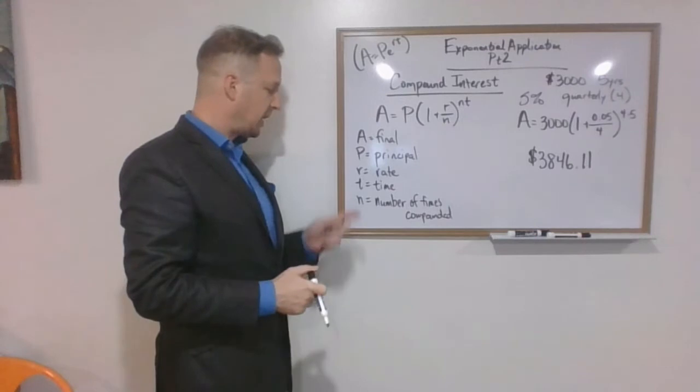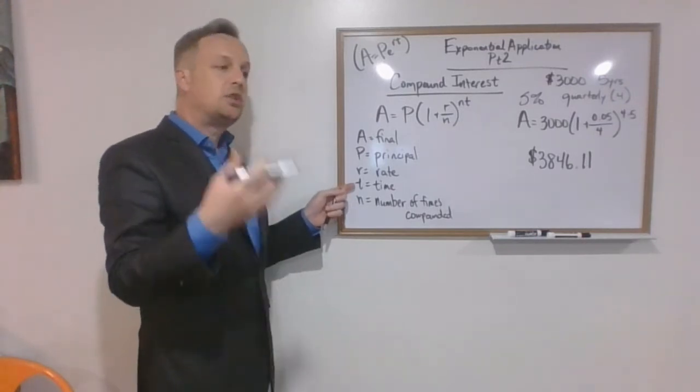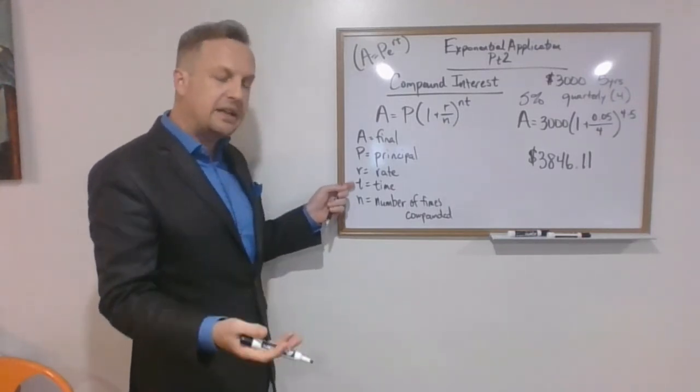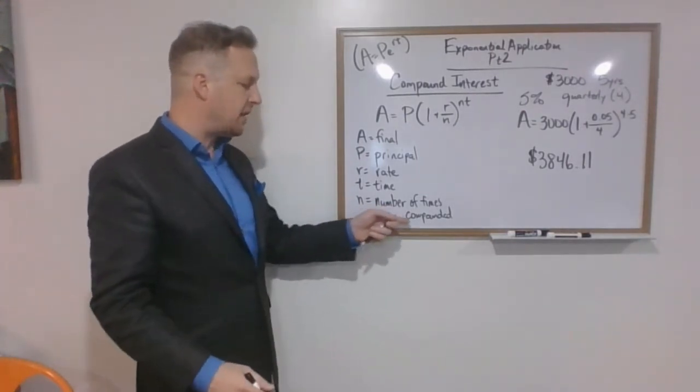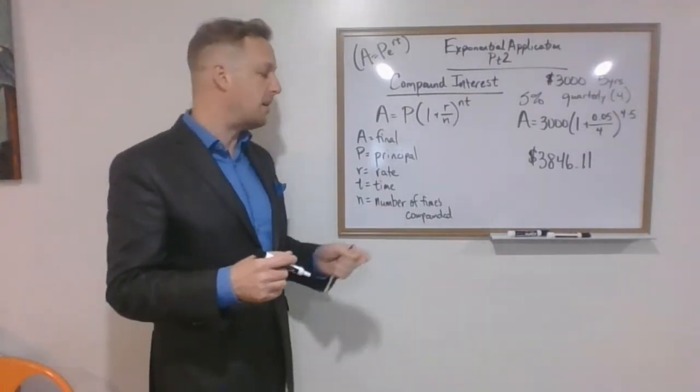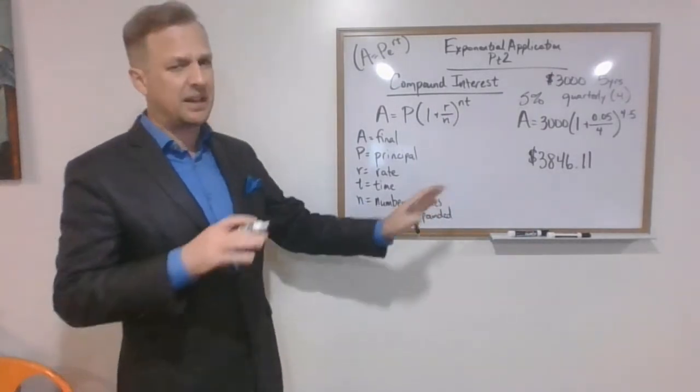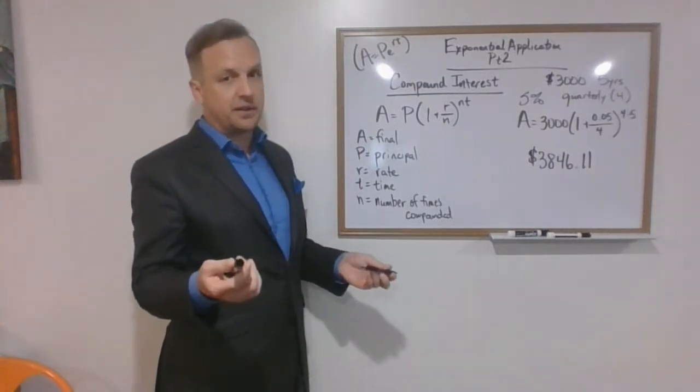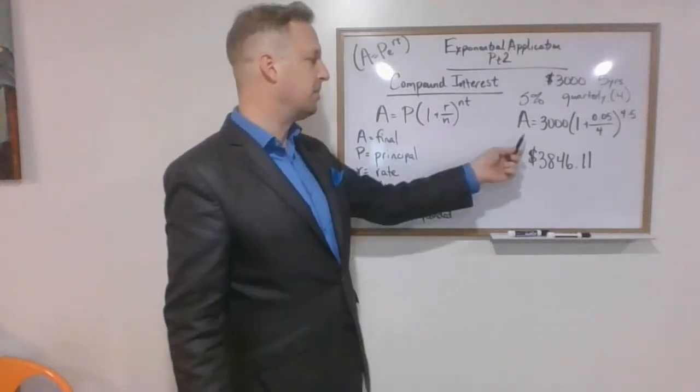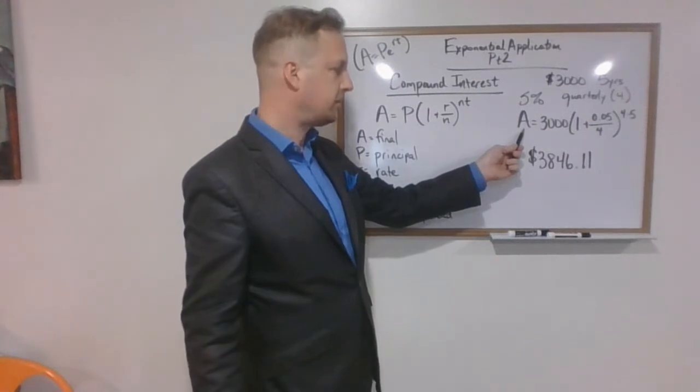The rate is always going to be expressed as a decimal. Time is the total time that we're going to leave the money in the account. And then n in the equation is the number of times that the interest is going to be compounded per year. I didn't put that on the end because I didn't want to clutter up the board too much.